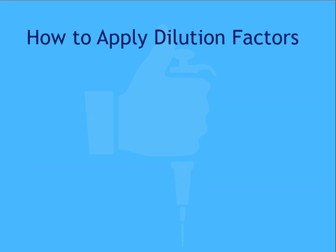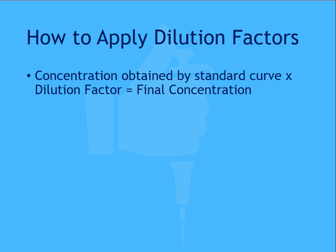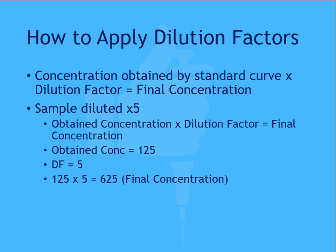Okay, so now we've identified the samples to dilute, and have calculated their dilution factors. How is this applied to the data analysis? Dilution factors are used to calculate the final concentration. The concentration obtained by the standard curve using the diluted sample is multiplied by the dilution factor to obtain a final concentration. So let's say we have a sample diluted times 5, meaning the dilution factor is 5. Applying this formula, the obtained concentration is 125. So, 125 multiplied by the dilution factor of 5 returns a final concentration of 625.